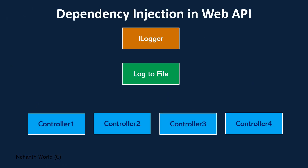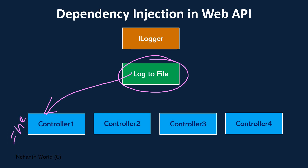This is my application. In my application I am using a logging mechanism. This is my logger, and these are the controllers using that logger. Currently I am logging everything into a file using the logging mechanism I have implemented. When I want to use this logger in my controller, I need to create an instance for it using the new keyword — for example, new LogToFile — and then use that object to call methods like object.info or object.error.